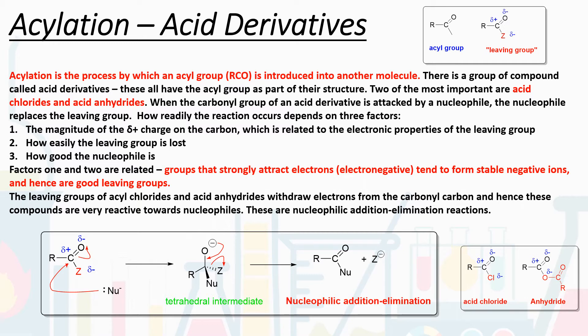It's very readily attacked by nucleophilic reagents. When we do this, the nucleophile replaces what we call the leaving group. I've denoted the leaving group at the top, and colored it in red for the acid chloride and anhydride. If we add a nucleophile to an acid chloride, our Cl is what leaves — it leaves as a chloride anion. In our anhydride, we end up kicking off a carboxylate anion.